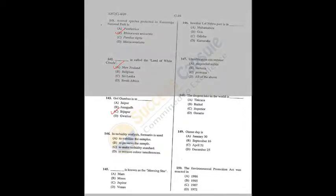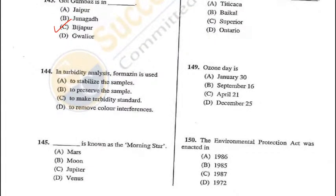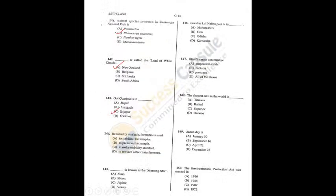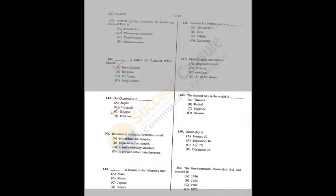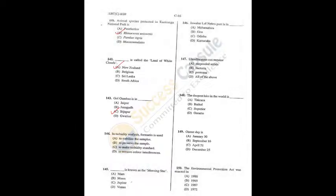Question 144: In turbidity analysis, formazine is used to make the turbidity standard — C is the correct answer. Question 145: Which is known as the morning star? Venus is known as both morning star and evening star — D is the correct answer. Q145 = D, Q144 = C.